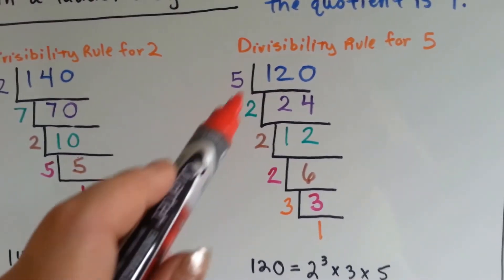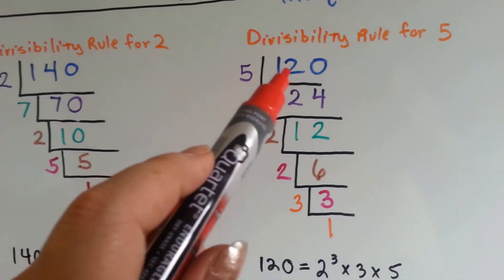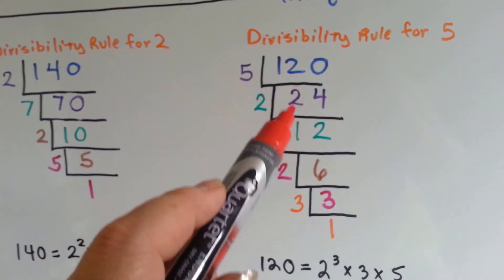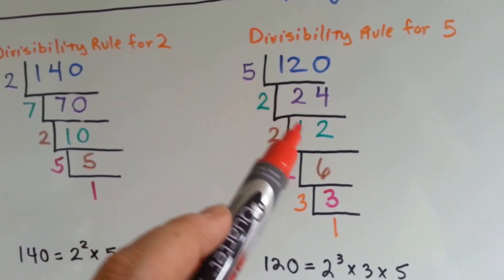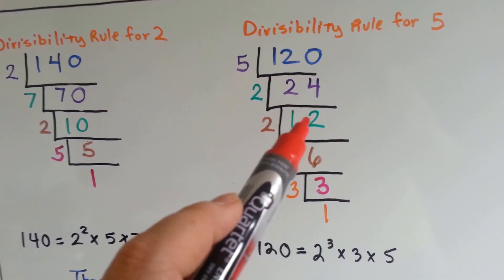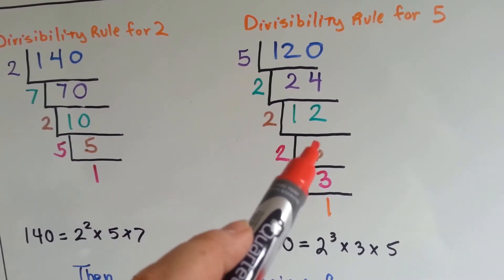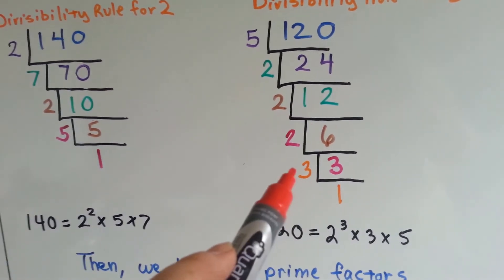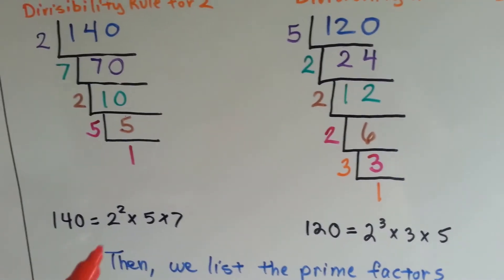Using the divisibility rule for 5 for 120. 120 divided by 5 is 24. Now, we've got to break up the 24. 2 times 12 is 24. Now, we have to break up the 12. What times what is 12? 2 times 6. Break up the 6. 2 times what is 6? 3. And we have to get to 1, so we do a 3 and then a 1.